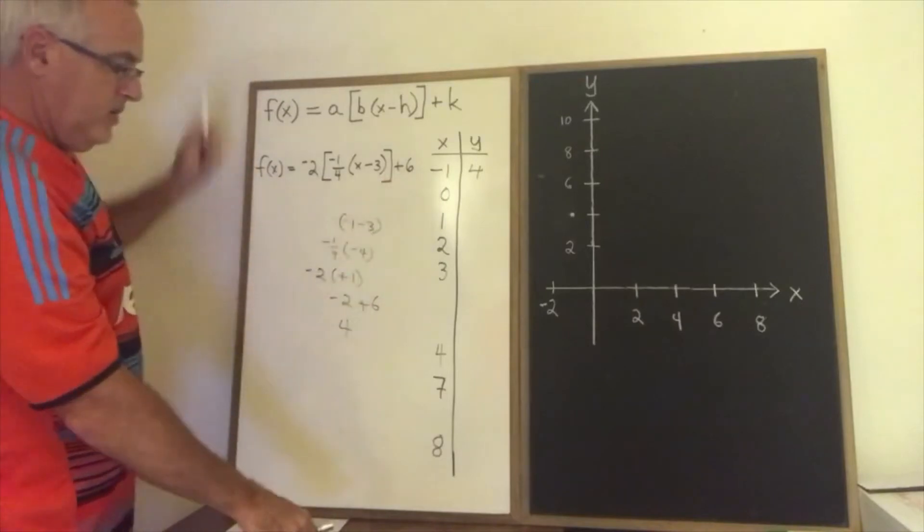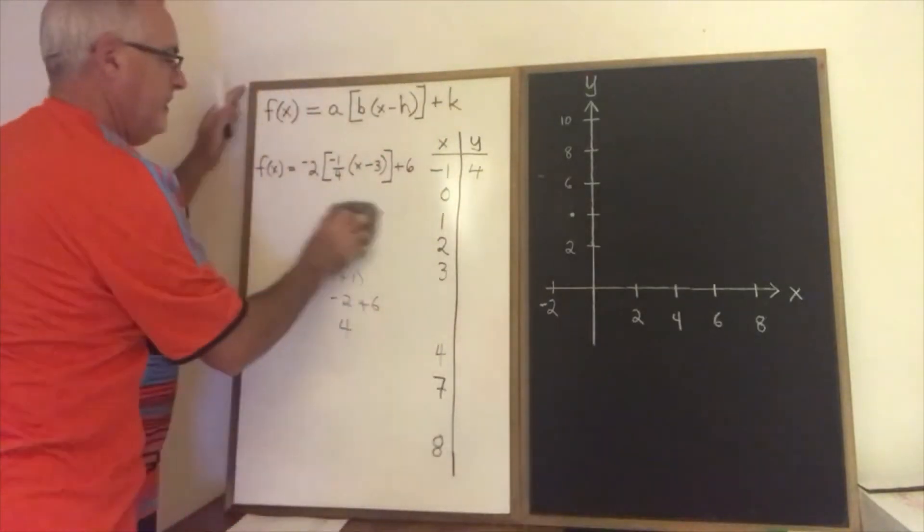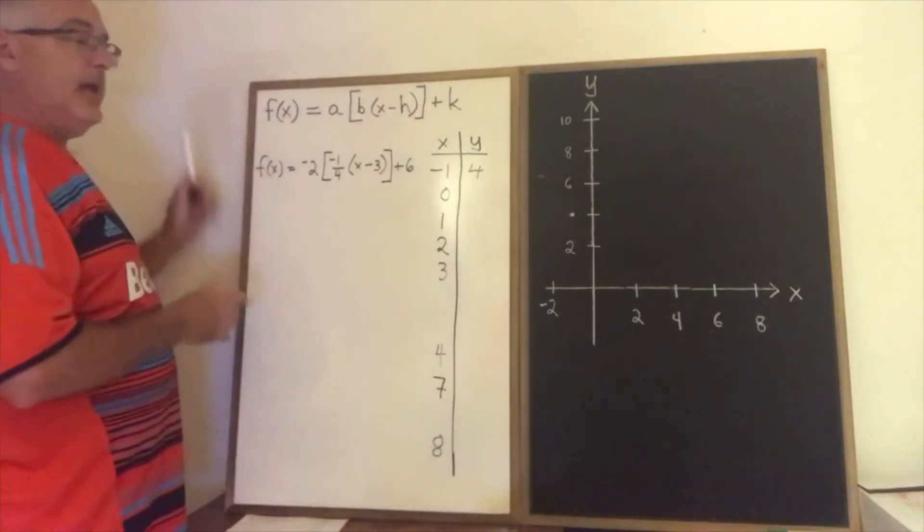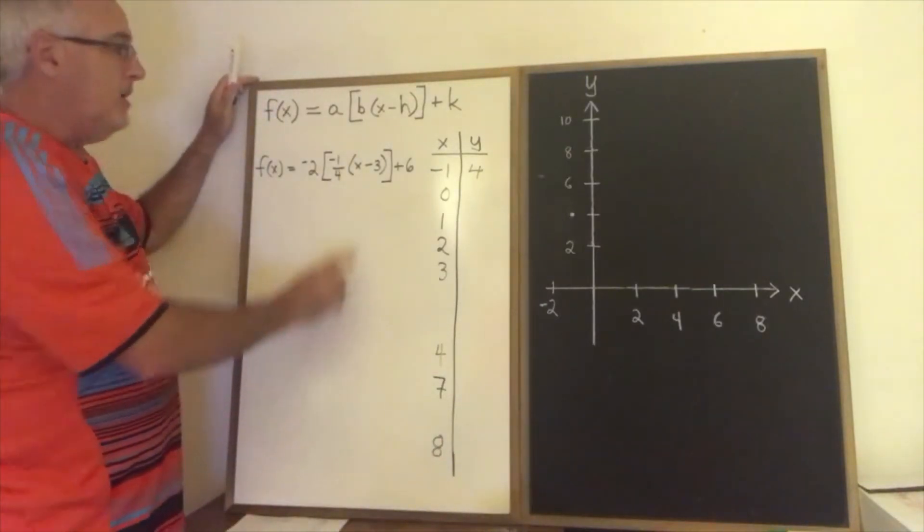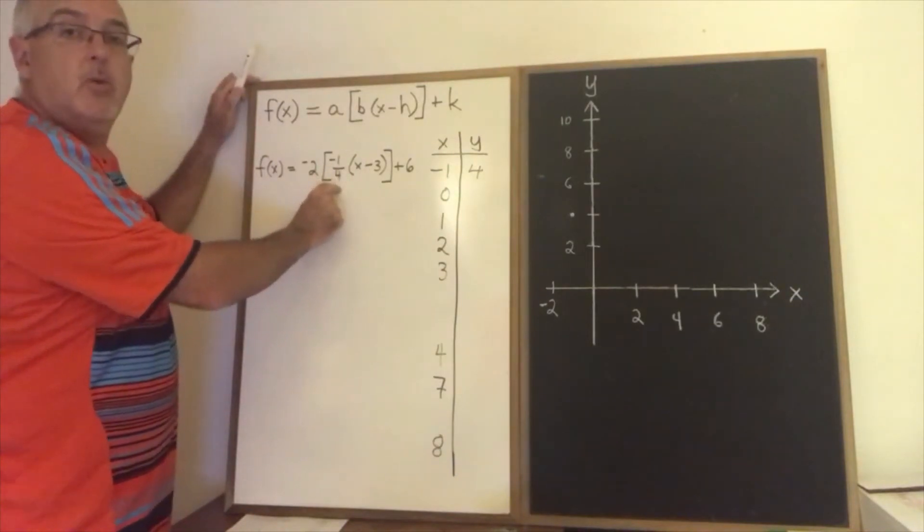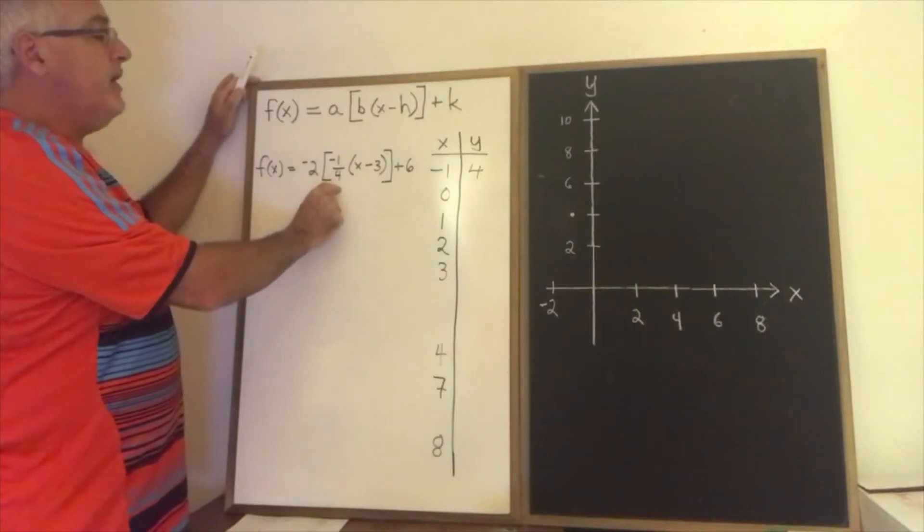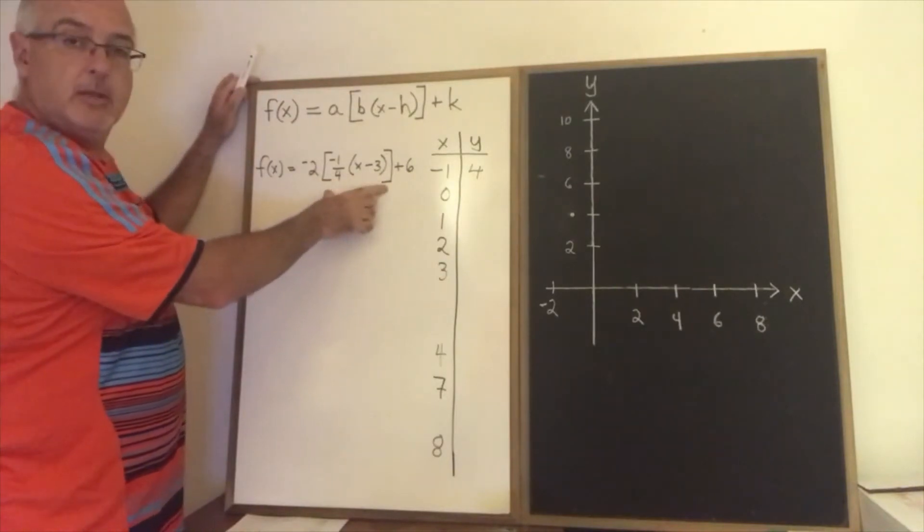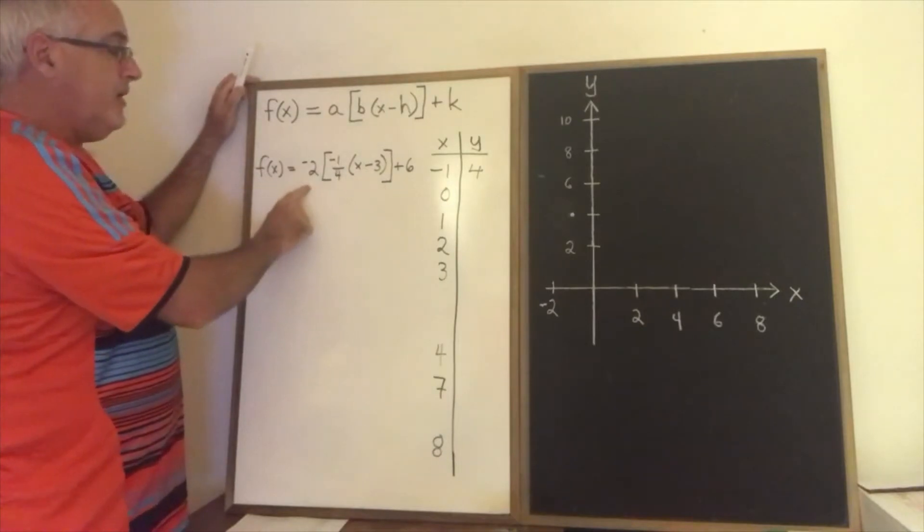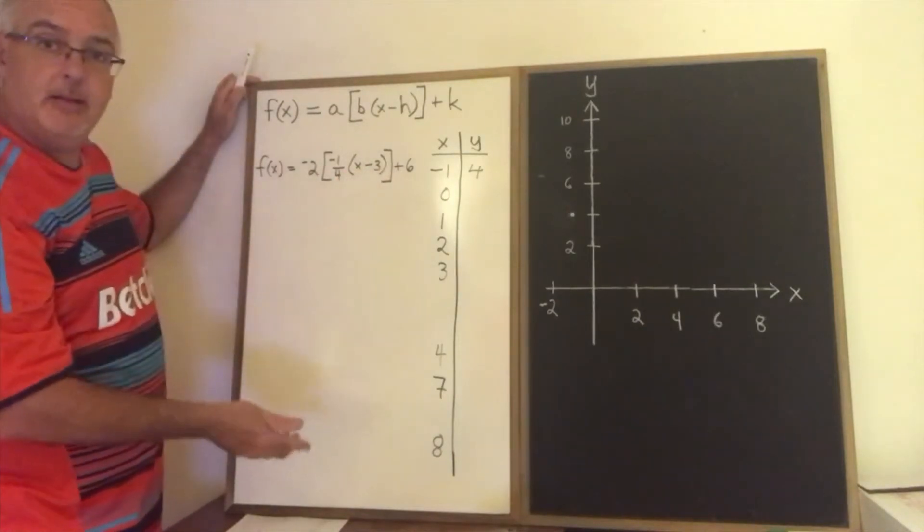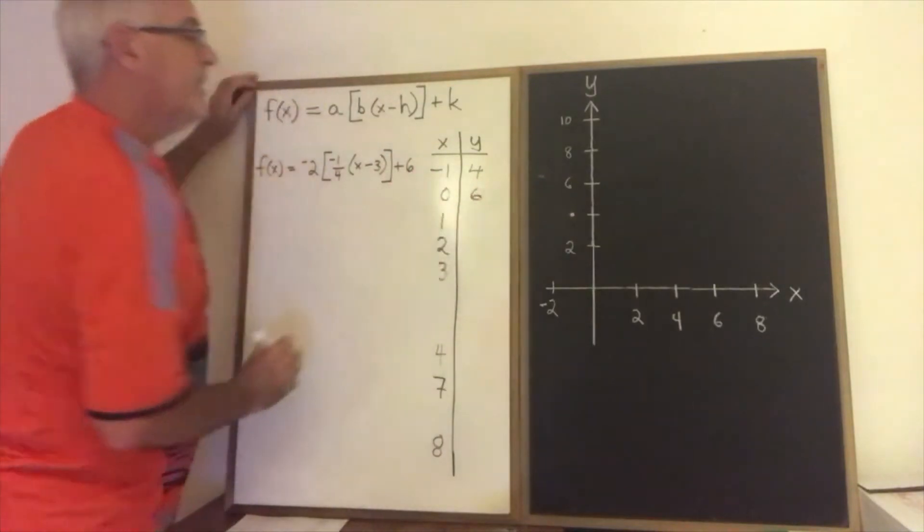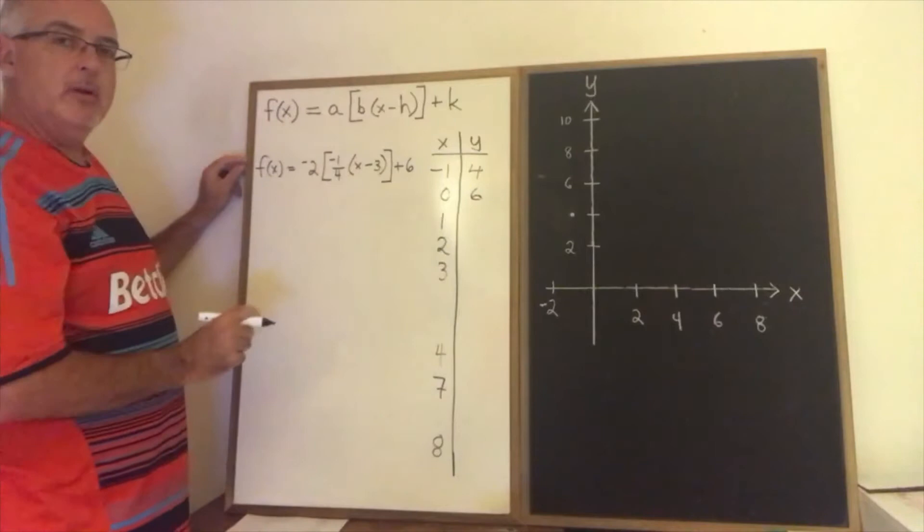If x is 0, I go through the same process again, but I'm not going to write it out this time. 0 minus 3 is negative 3. Negative 3 times negative 1 quarter is positive 3 quarters, or 0.75. The greatest integer less than or equal to 0.75 is 0. 0 times negative 2 is 0. And 0 plus 6 is 6. So my y coordinate will be 6. Quickly, let's do a couple more and see what happens.